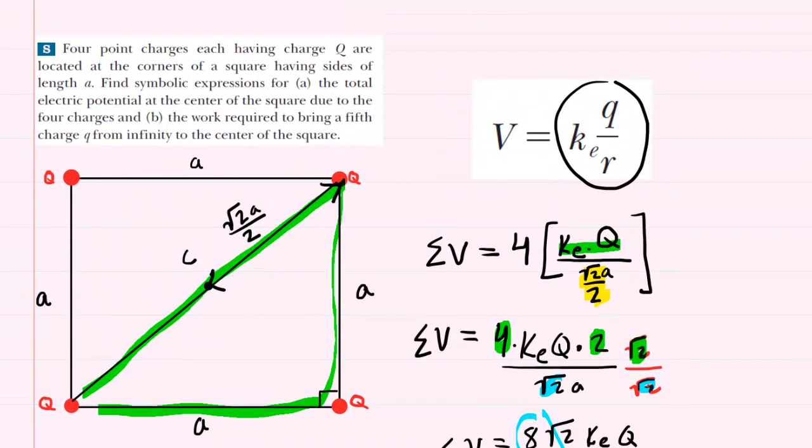Now on to part B, which wants us to calculate the work required to bring a fifth charge symbolized by lowercase q from infinity to the center of the square.